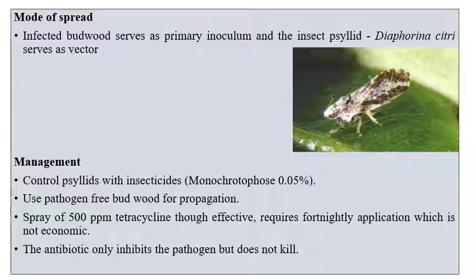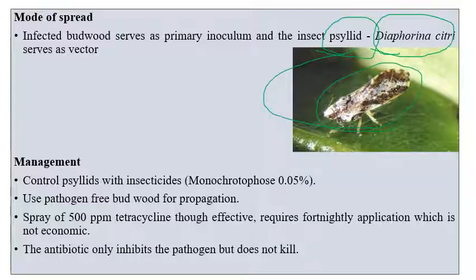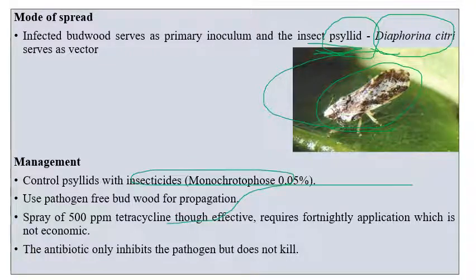Citrus greening spreads by psyllids (Diaphorina citri), which are the important vector species. Budwood grafting is also a mode of transmission. For management, monocrotophos at 0.05% can control the psyllid vector. Use pathogen-free propagating materials or certified budwood. Spraying 500 ppm tetracycline gives effective control. Importantly, antibiotics only inhibit the pathogen — they do not kill it.